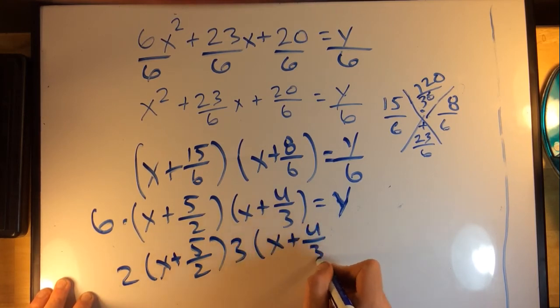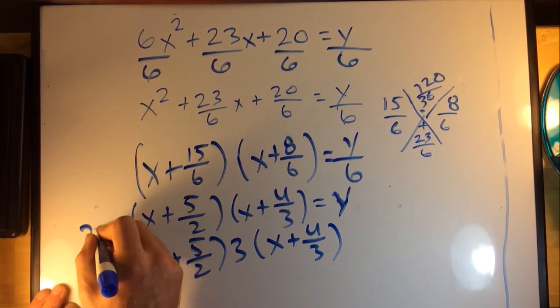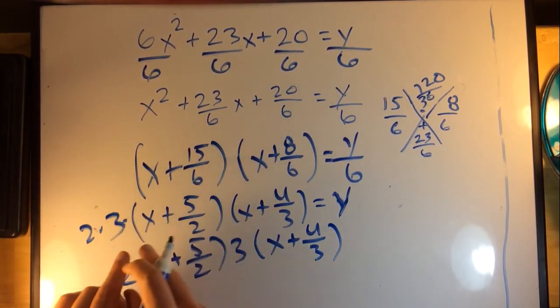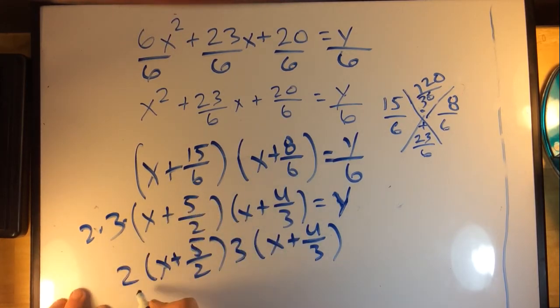With multiplication the order doesn't matter. I just put my 2 in front here, my 3 in front here. Then if I distribute these through, I'm going to get 2 times x will give me 2x plus 5/2 multiplied by 2. Those 2s are going to cancel out and I'll be left just with 5, so I've got 2x + 5 here.